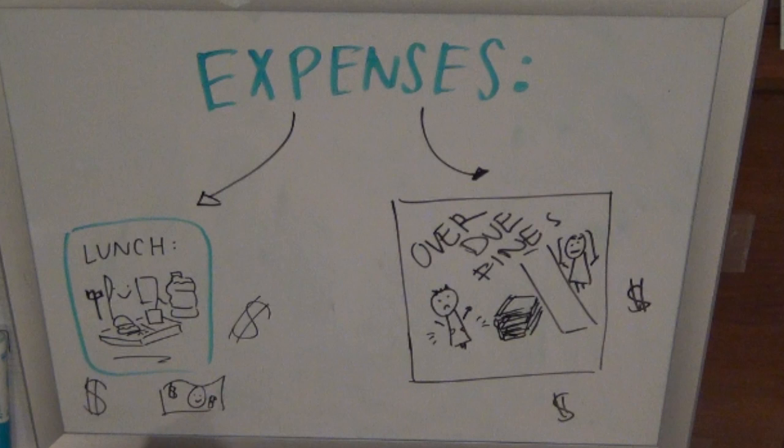Under the expenses section, students will be given the opportunity to track their school financial accounts, including their library fines and lunch money accounts. This will eliminate the need for paper notifications regarding overdue library books and low lunch money fines.